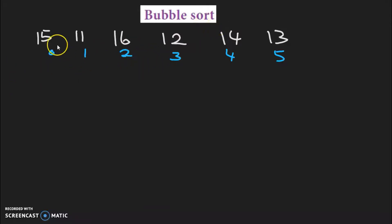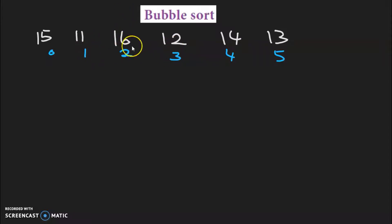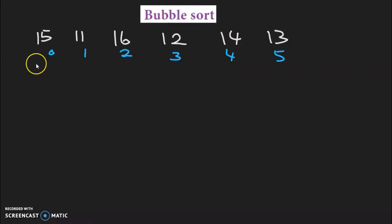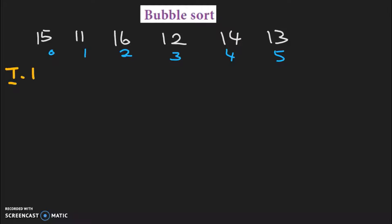The real comparisons will happen like this: the first element will be compared. If the order is not correct, we will do an exchange. Then 2nd and 3rd elements compare; if order is wrong, exchange. Then 3rd and 4th compare and exchange. This is less effective compared to other sorting algorithms. In the algorithm, we will always start at index 0 for the first iteration.